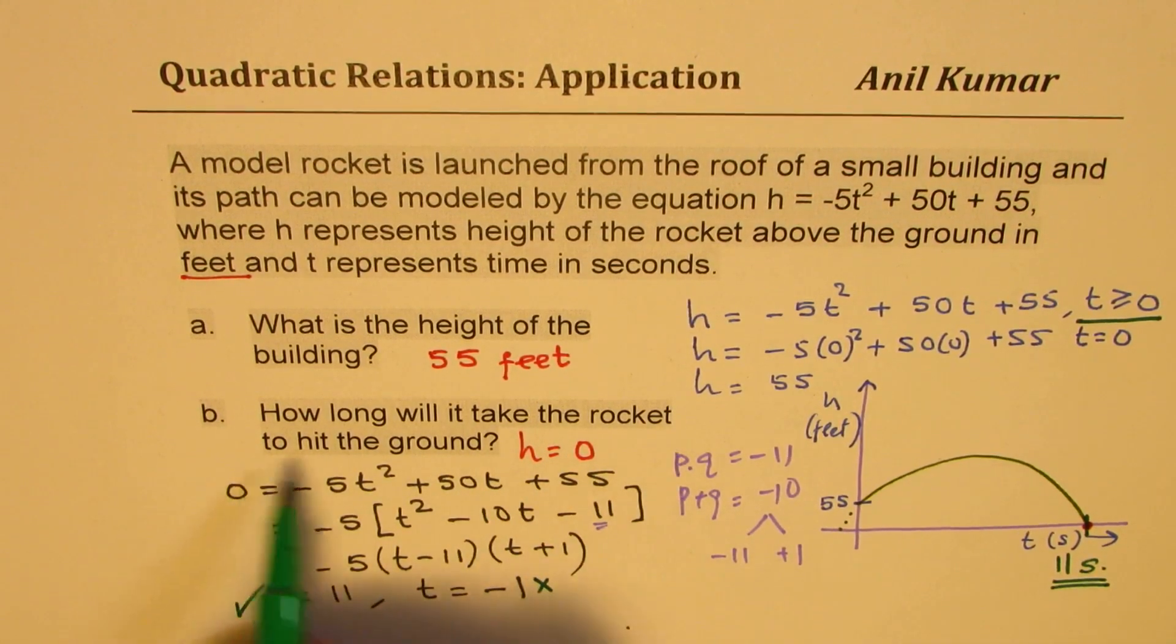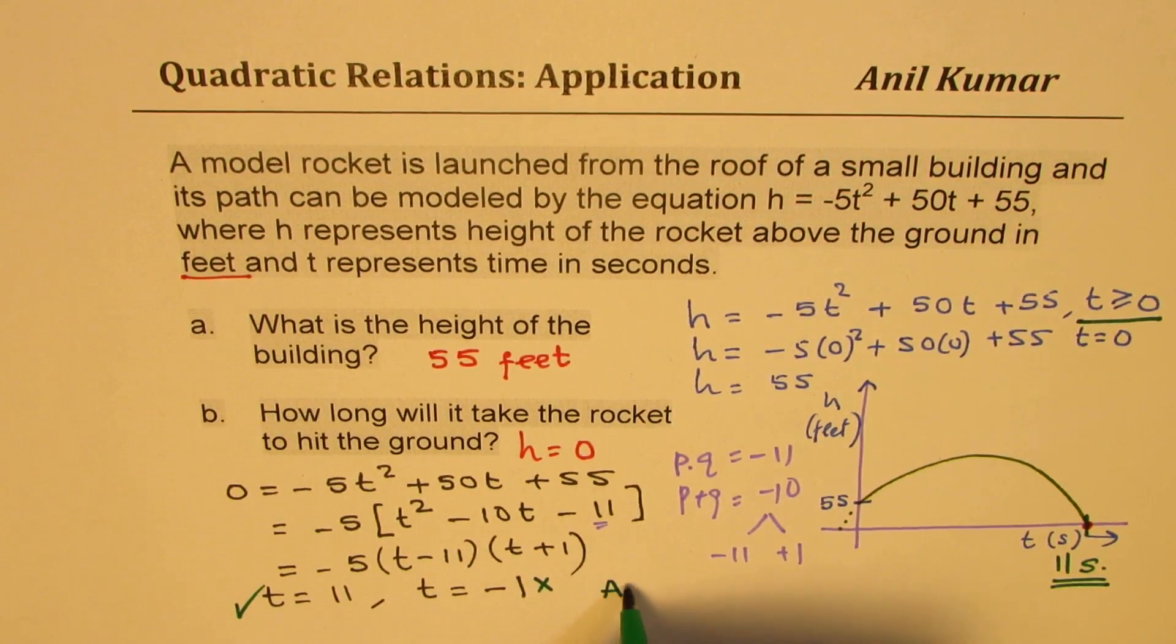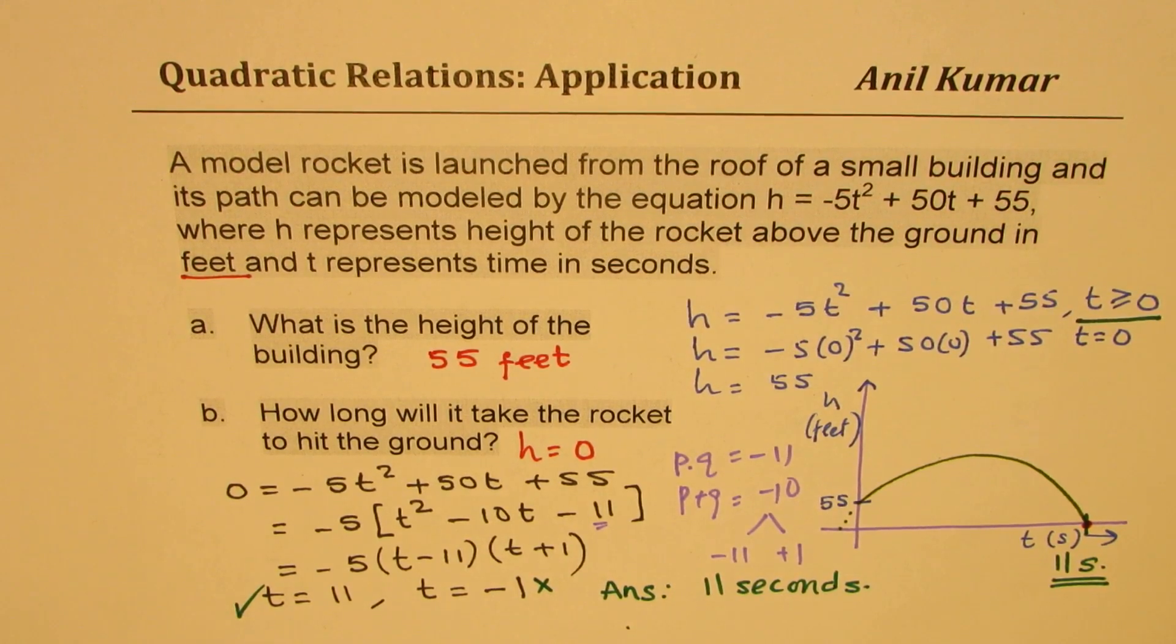How long will the rocket take to hit the ground? The answer here is 11 seconds. Include units in your answer. That is extremely important. I hope it makes sense. Feel free to share your views and your doubts. Share my videos with your friends. And all the best.